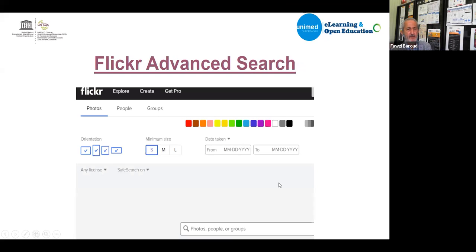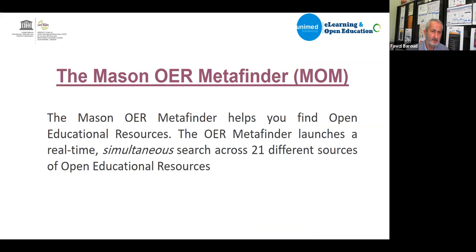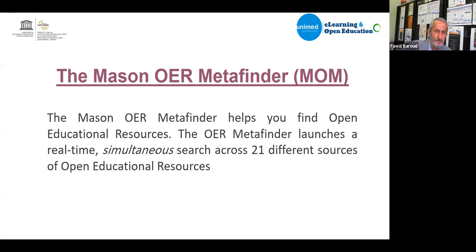Another example is Flickr Advanced Search, where you can filter pictures by open license. The Mason OER Metafinder is a very important search engine — when you search for a resource, it simultaneously searches 21 different open educational resource sources and repositories, returning results from all of them at once.